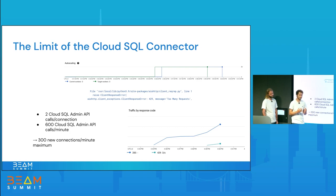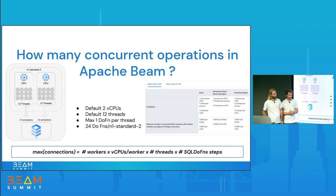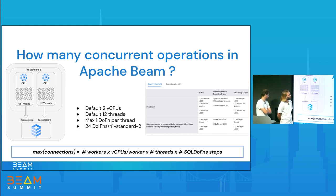We need to find a way to predict the number of connections that will be created in order to never reach this limit. You cannot predict the exact number, but you can have an upper bound. The Dataflow service does not guarantee how many times a DoFn will be invoked, nor the exact number of DoFn instances created over the course of your pipeline. However, a table in the documentation gives insights on the level of parallelism you can expect and estimates an upper bound on the number of DoFn instances.